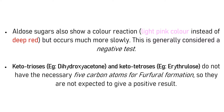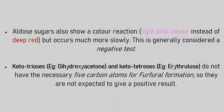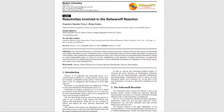Aldose sugars also give a positive test, but the reaction is much slower and they give a light pink color instead of deep red. This is generally considered a negative result. Ketotrioses and ketotetroses do not have the necessary 5-carbon atom for furfural formation, so they are not expected to give a positive result for this reaction. To know more about why aldose sugars react slower than ketose sugars, click on the link to a research paper attached in the description below.